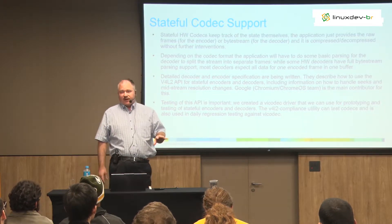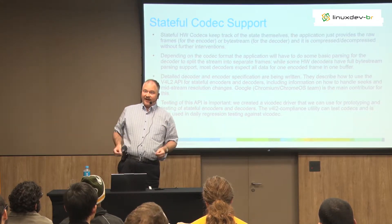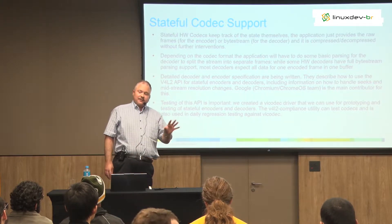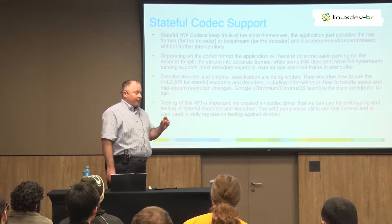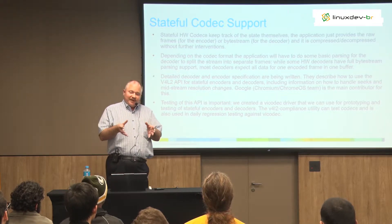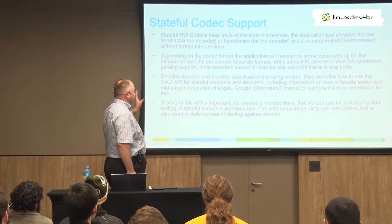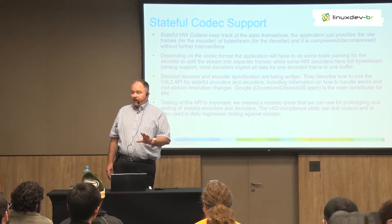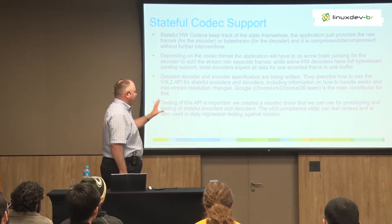There are some decoders that are not quite that fancy — there you actually still have to parse the byte stream in software and find the frames themselves and the metadata that describe how the frames should be decoded. In practice, GStreamer and FFmpeg all do that — they pre-parse the byte stream into the frames plus any headers and give that to the decoder. One thing that was missing when this was added to Video4Linux was a really detailed description of how you handle corner cases — how do you do a seek inside the stream, how do you handle midstream resolution changes?